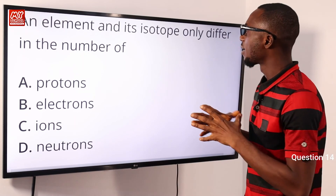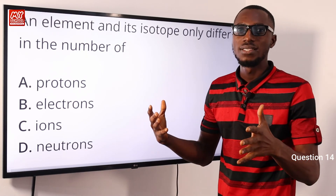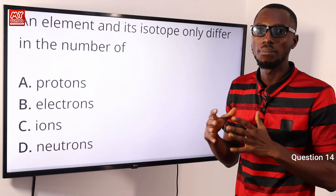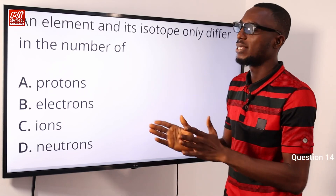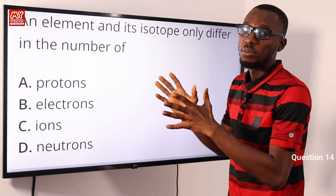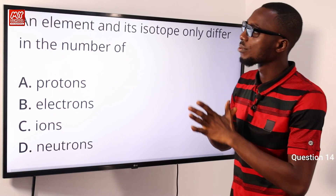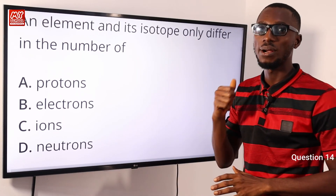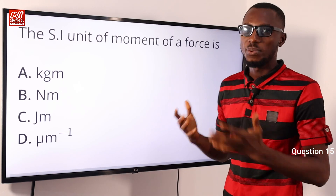Question 14: an element and its isotope only differ in the number of what? Isotopes are elements that have the same proton number and atomic number but different atomic masses, due to differences in their number of neutrons. They maintain the same number of protons and electrons but different numbers of neutrons. The correct option is option D — neutrons.